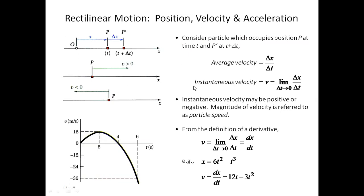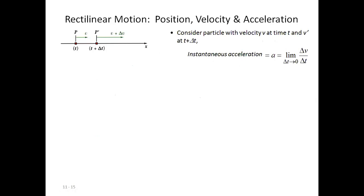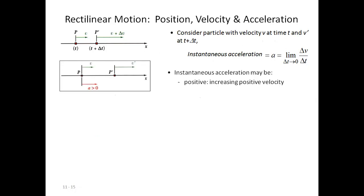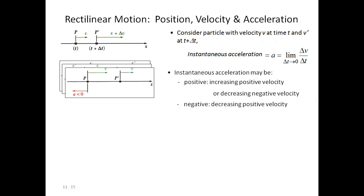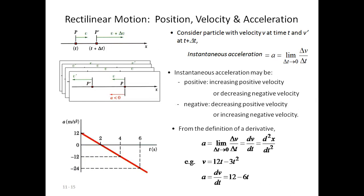Velocity is given by dx/dt. If position is described as a function of time, we differentiate it to get velocity. The same approach applies to acceleration — if we double differentiate the position equation, we get acceleration. For instantaneous acceleration, we apply a limit. Acceleration is positive when increasing a positive velocity or decreasing a negative velocity. Acceleration is negative when decreasing a positive velocity or increasing a negative velocity.